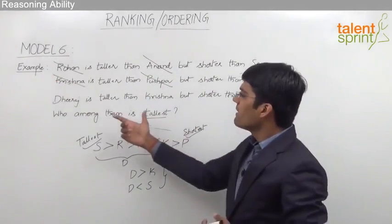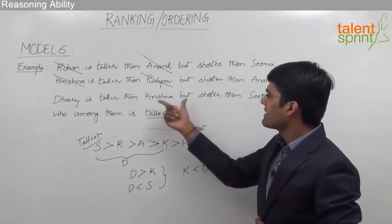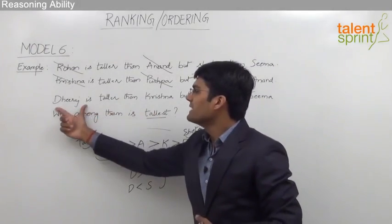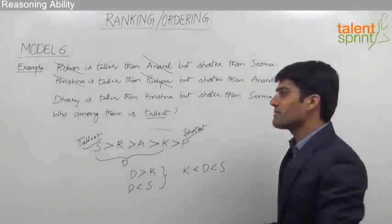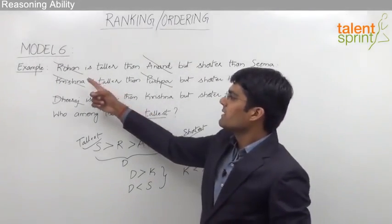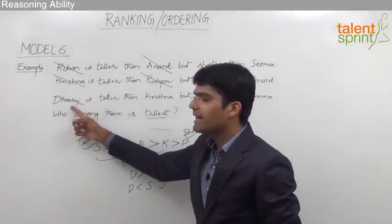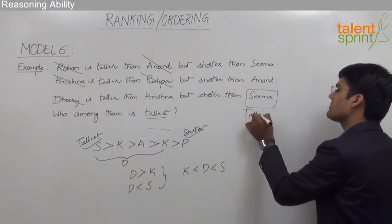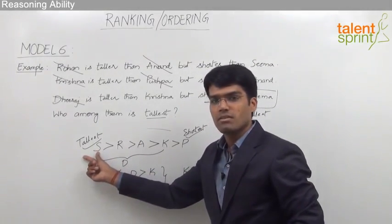From the last statement, Dhiraj is taller than Krishna but shorter than Sima. Since Krishna is already eliminated, we directly compare Dhiraj with Sima — Dhiraj is shorter than Sima, so Dhiraj cannot be the tallest and is also eliminated. From the six persons, we have eliminated five: Rohan, Anand, Krishna, Pushpa, and Dhiraj. The only person left is Sima, confirming that Sima is the tallest — the same answer as Method 1.